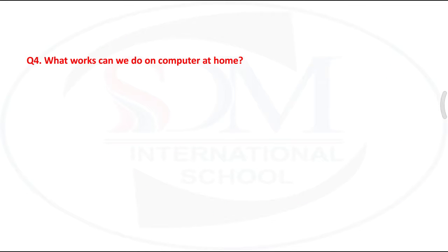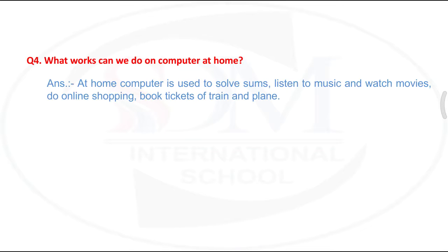Next question: what works can we do on a computer at home? We can solve sums, listen to music, watch movies, do online shopping — यानि कि खरीददारी कर सकते हैं — and book tickets of train and plane. घर पर बैठे बैठे train और aeroplane की ticket book करवा सकते हैं।